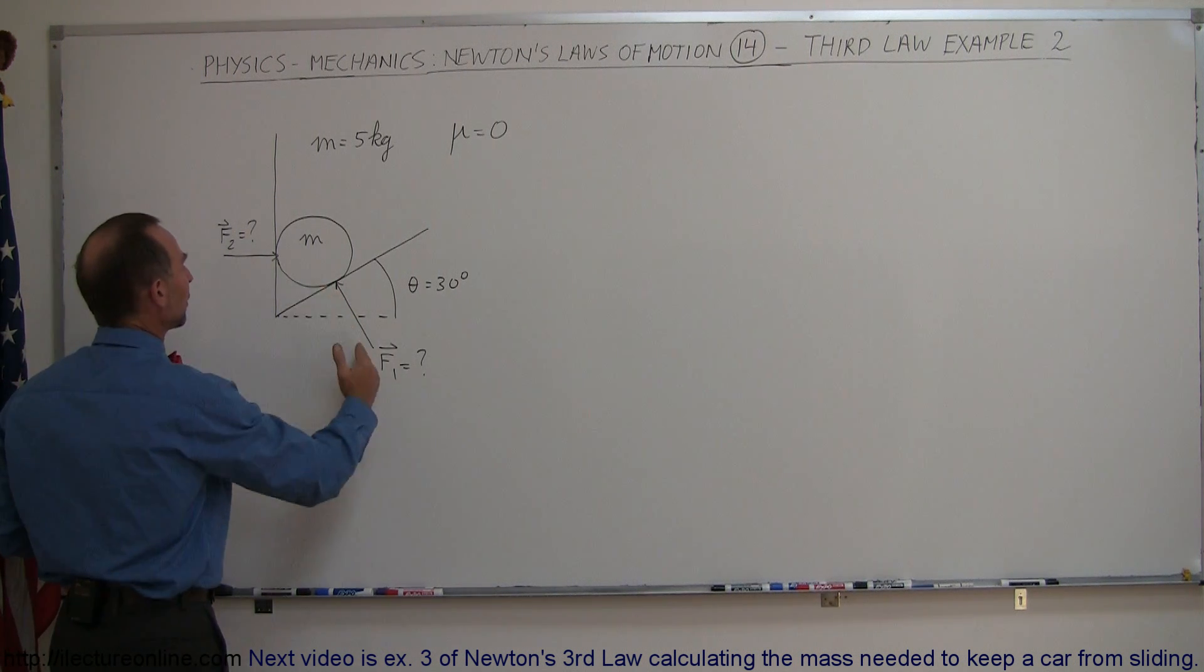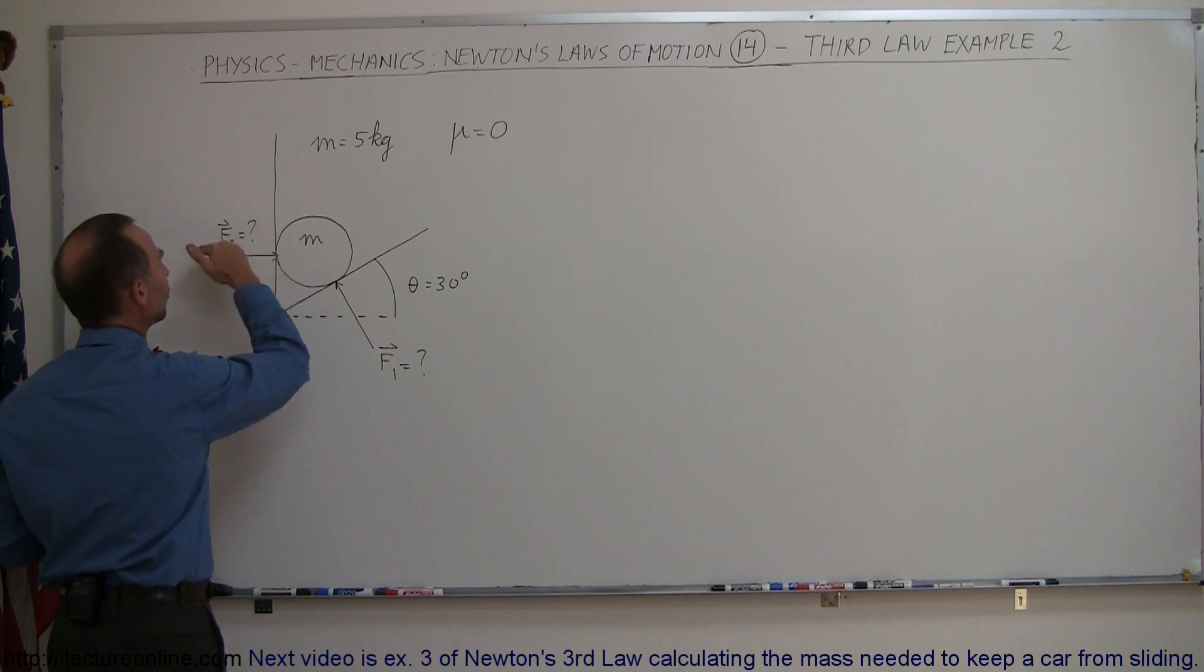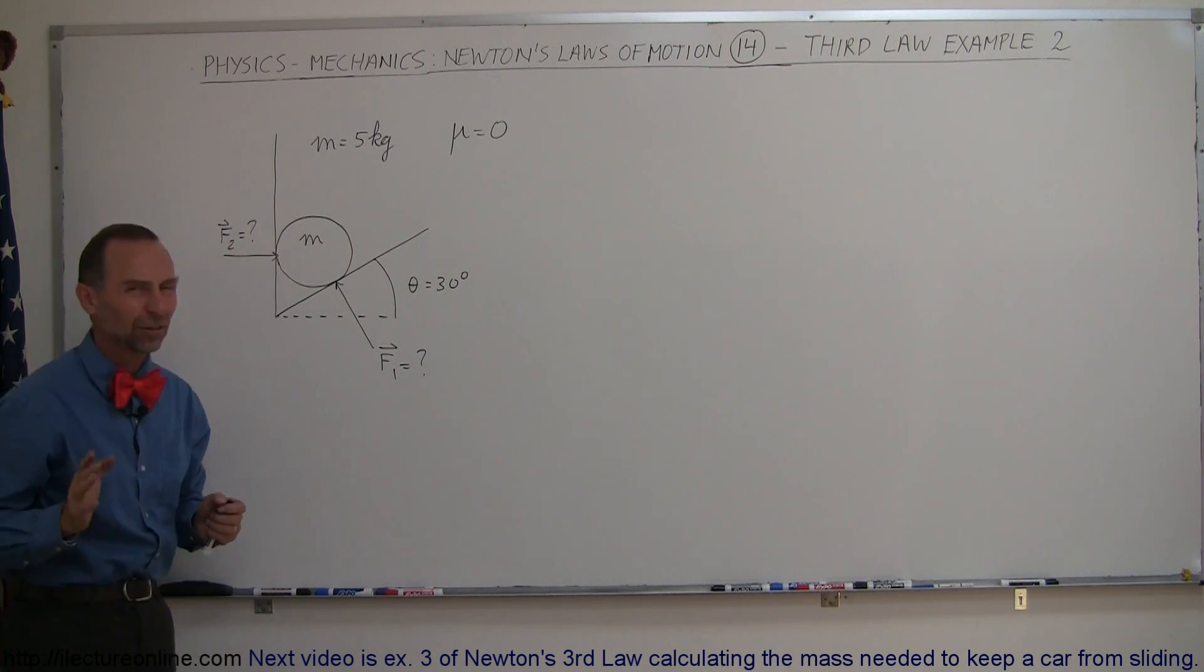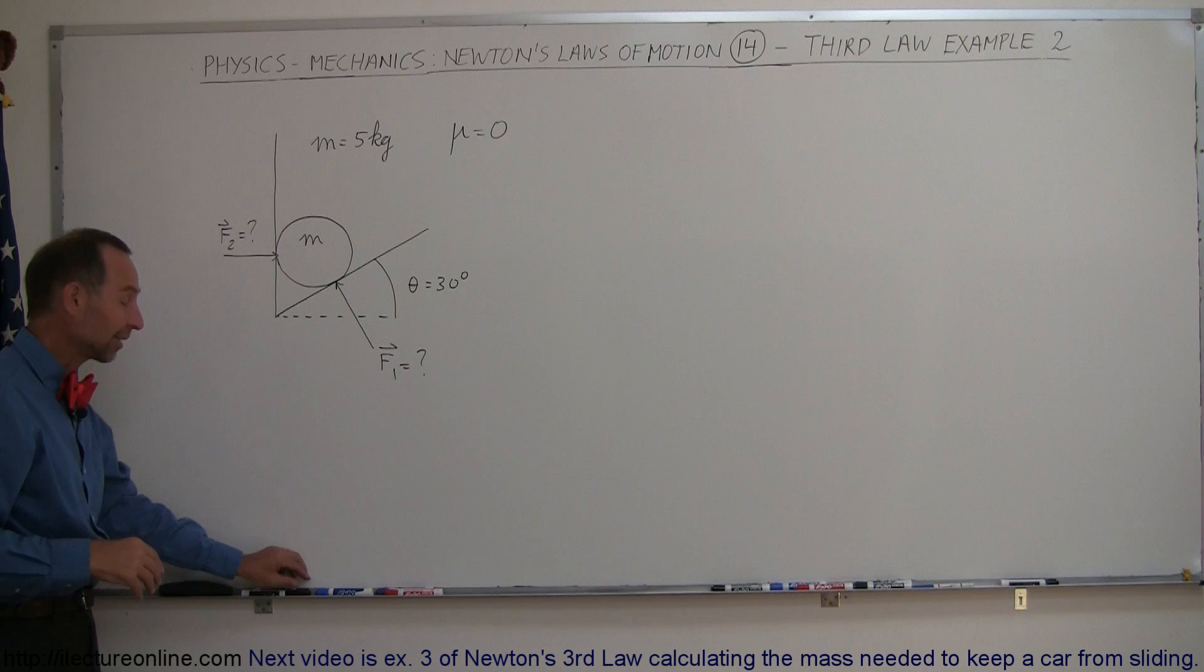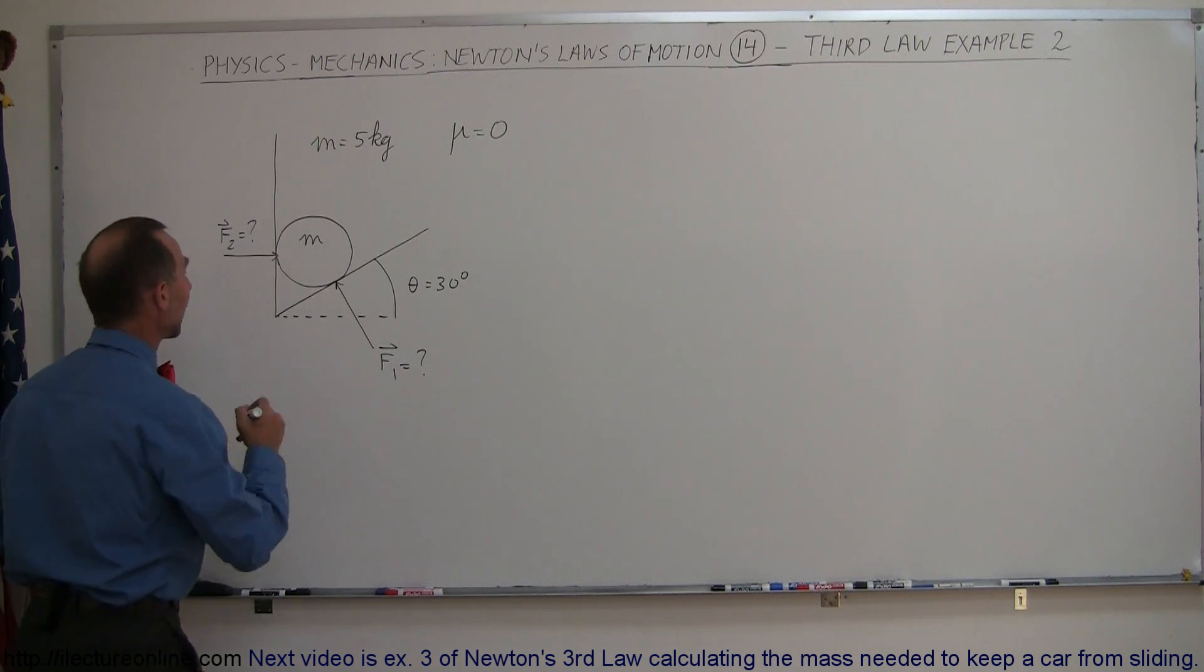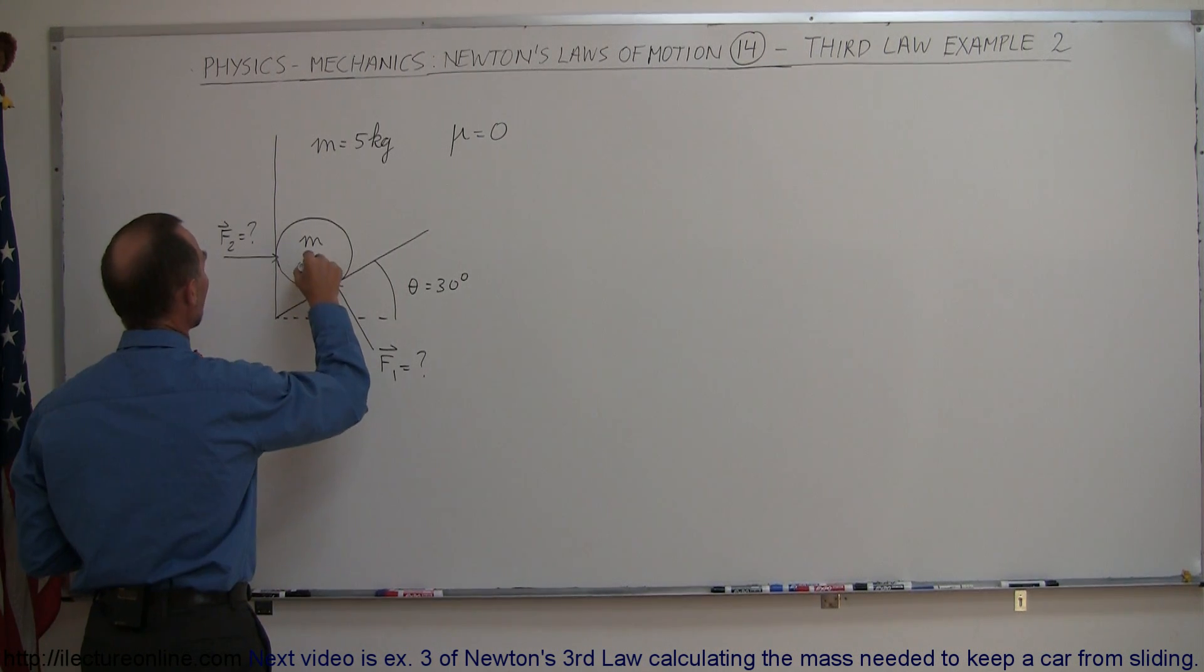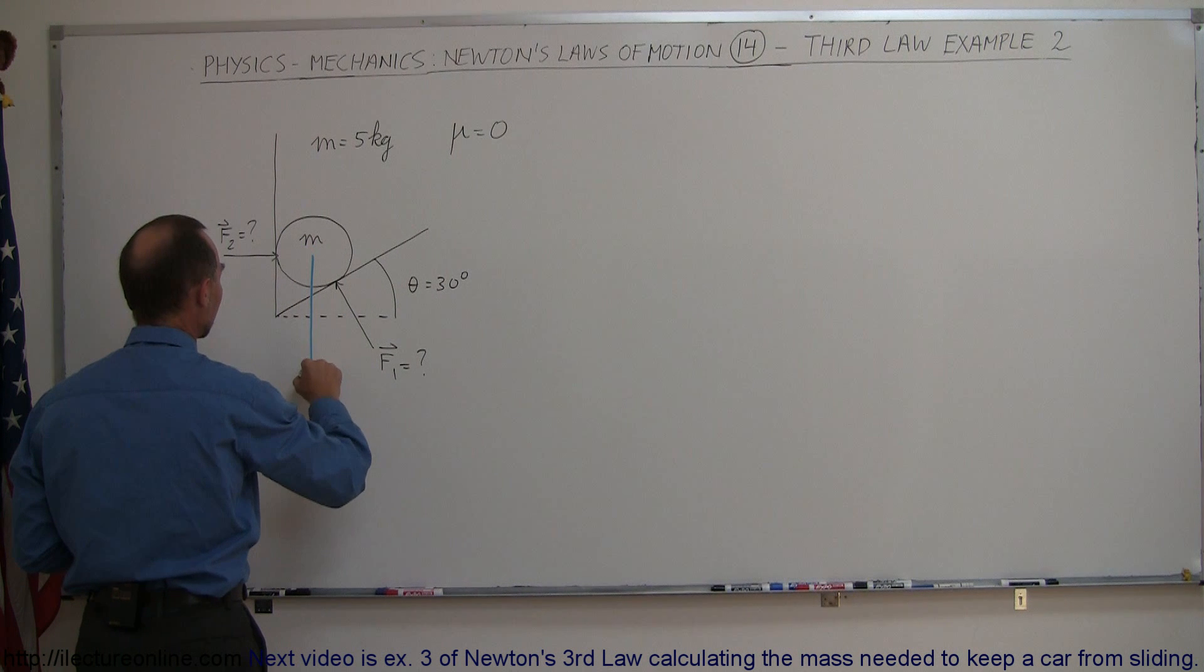In this case, we know that F1 will be perpendicular to the surface here, and F2 must be perpendicular to the surface there. We also realize that gravity is at work, so we have the force of gravity pulling this object downward, which equals Mg.